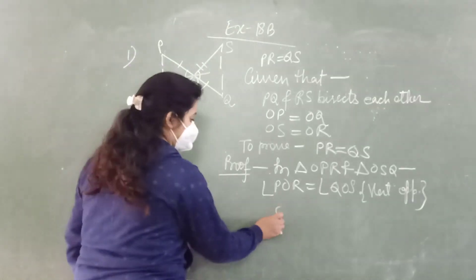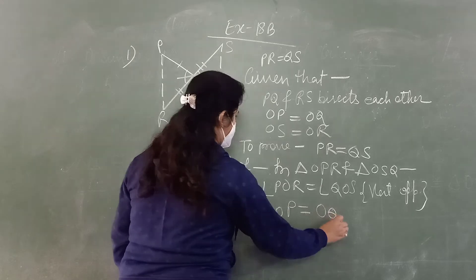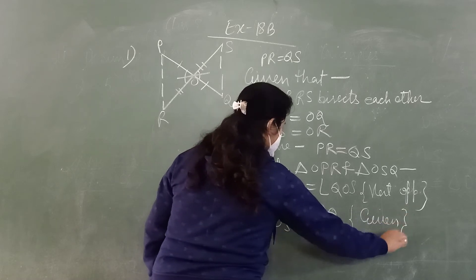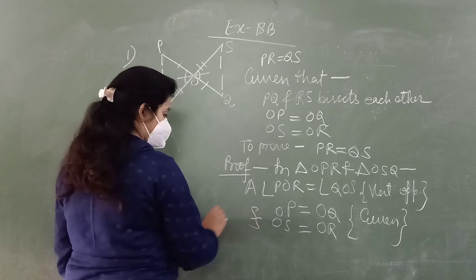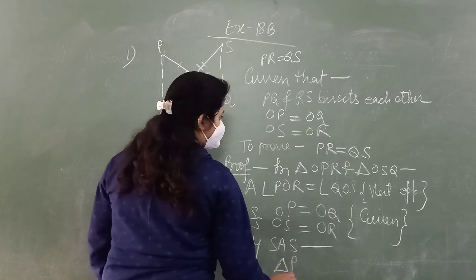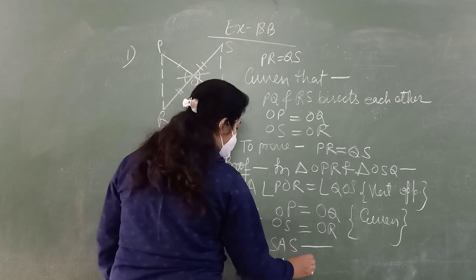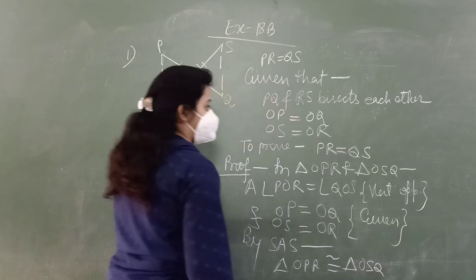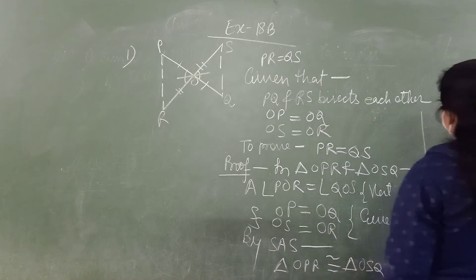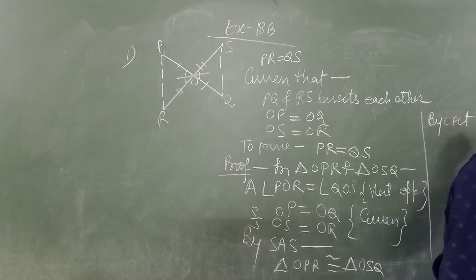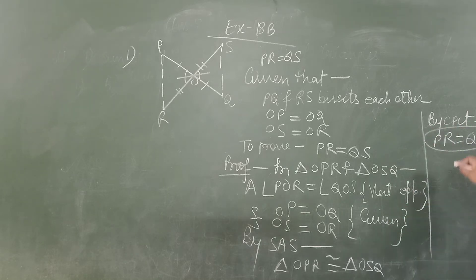The two given equal values are: OP is equal to OQ, and OS is equal to OR — reason: given. Now we have one angle and two sides equal. So by SAS, triangle OPR is congruent to triangle OSQ. So by CPCT — corresponding parts of congruent triangles — PR is equal to QS. Hence it is proved.